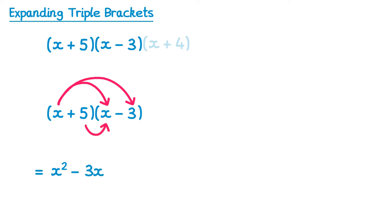The inside terms, that's plus 5x. And the last terms, 5 times negative 3 gives negative 15. We can then simplify the x terms in the middle to give 2x. So we end up with this quadratic here.